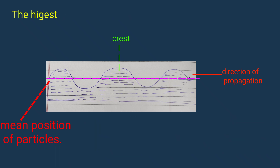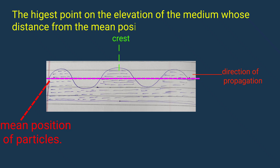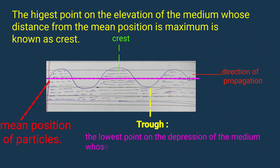The highest point on the elevation of the medium, whose distance from the mean position is maximum, is known as the crest. The lowest point on the depression of the medium, whose distance from the mean position is maximum, is known as the trough.